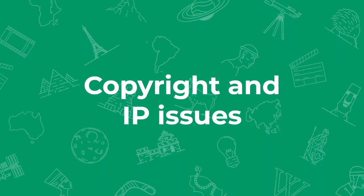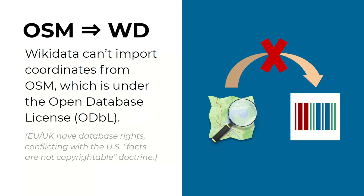Some copyright and IP issues: Wikidata can't import coordinates from OpenStreetMap. The reason is that OpenStreetMap is licensed under the Open Database License. We also have conflicting doctrines — in the European Union and the United Kingdom we have database rights, whereas in the US the idea is that facts are not copyrightable. Even so, doing a batch import is not allowed because OpenStreetMap is protected by database rights being hosted in the United Kingdom.